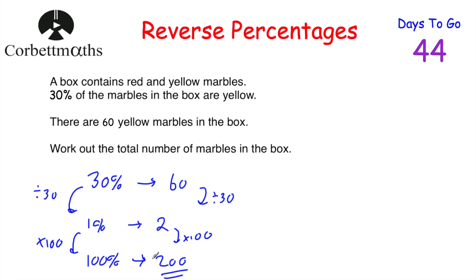Let's check that: if we had 200 marbles and worked out 30% of that — dividing by 10 gives 20, so 10% is 20, meaning 30% would be 60. That's 60 yellow marbles, which is correct. So there are 200 marbles in the box.